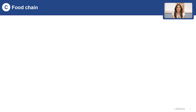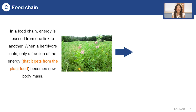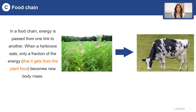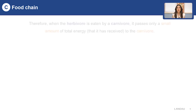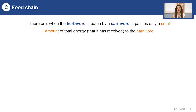Now let's talk about the food chain. In a food chain, energy is passed from one link to another. When an herbivore eats, only a fraction of energy becomes the new body mass. The rest of the energy is lost as waste or used up by the herbivore to carry out its life processes such as movement, digestion, and reproduction. So when the herbivore is eaten by a carnivore, it passes only a small amount of total energy to the carnivore.